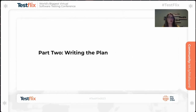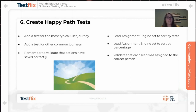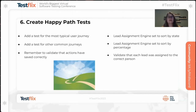Now that we've done our research, it's time to write the plan. Step six is to create happy path tests. Add a test for the most typical user journey, then add tests for other common journeys. Remember to validate that actions have saved correctly — it's not enough to see the feature looks like it's working in the UI; you want to make sure it's really saving to the database. For my lead assignment engine, I tested sorting by state and sorting by percentage, since those were the most common use cases, and I validated that leads sent in were assigned to the correct person.